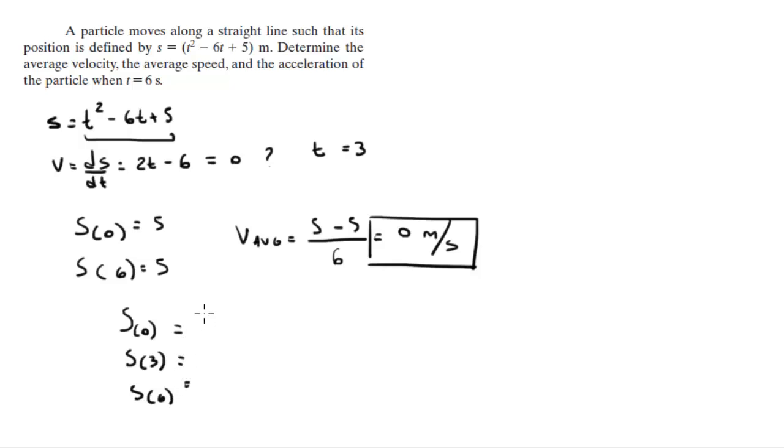We already know that the position at 0 and at 6 is 5 for both of them, but what's the position at 3? At 3 the position is negative 4. So the particle went from 5 to negative 4 and back to 5. From 5 to negative 4 it moved 9 spots, and from negative 4 back to 5 it moved another 9 spots. When you add them together, you realize that this particle moved 18 meters in a matter of 6 seconds.